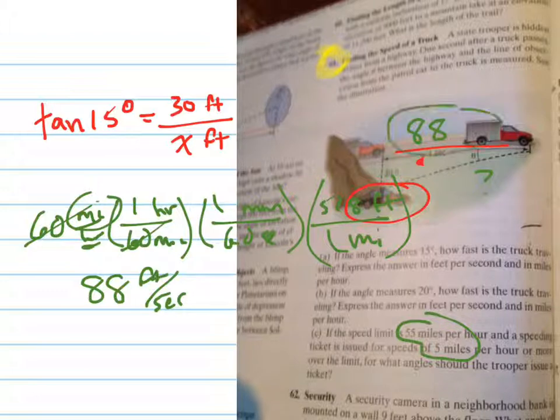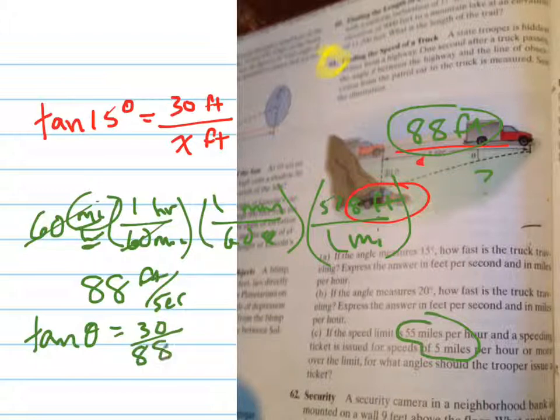So 88 feet is the distance that you can go in one second, and so now let's turn this problem back into a tangent problem. The tangent of what angle equals the opposite, which is 30, over the adjacent, which is 88.